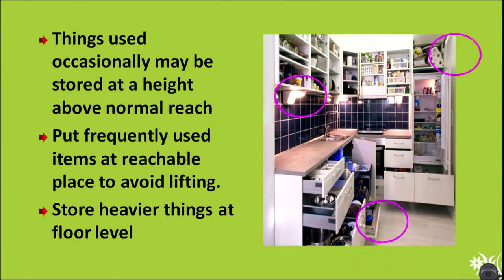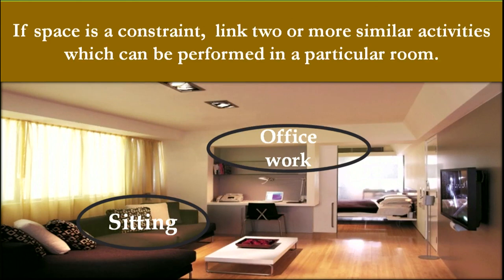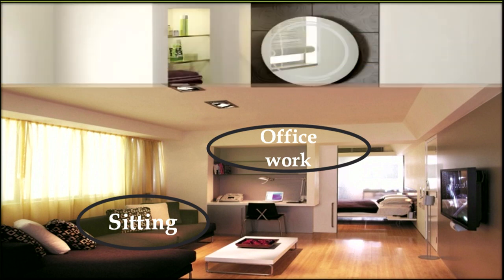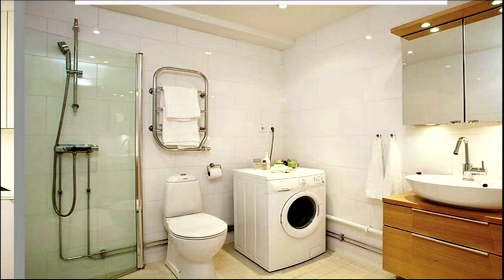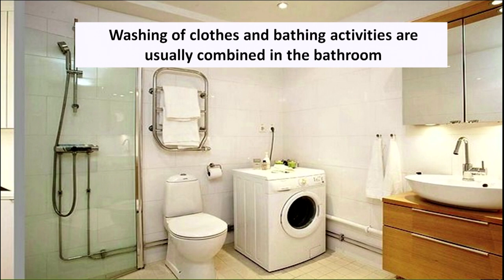The available space can be used for a variety of activities. In one picture you can see the sitting area in the drawing room, and in the corner office work can also be done in the same room, allowing the other space to be freed for the second room. In the bathing area, a washing machine can also be kept there — meaning this area is used for two purposes. Washing of clothes and bathing activities are usually combined in the bathroom because both require a water supply.